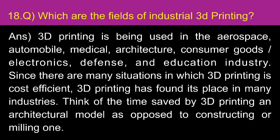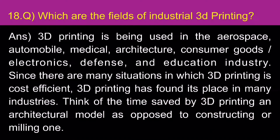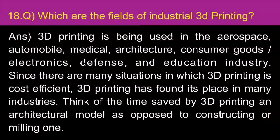What are the fields of industrial 3D printing? 3D printing is being used in the aerospace, automobile, medical, architecture, consumer goods, electronics, defense, and education industries. Since there are many situations in which 3D printing is cost-efficient, it has found its place in many industries. Think of the time saved by 3D printing an architectural model as opposed to constructing or milling one.